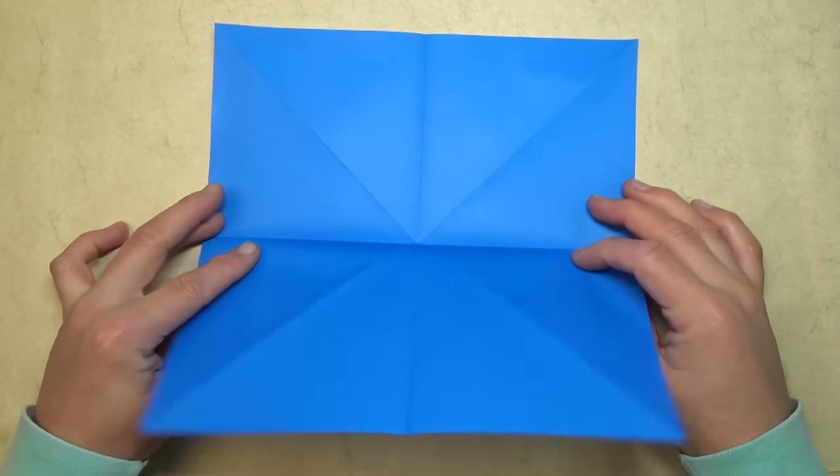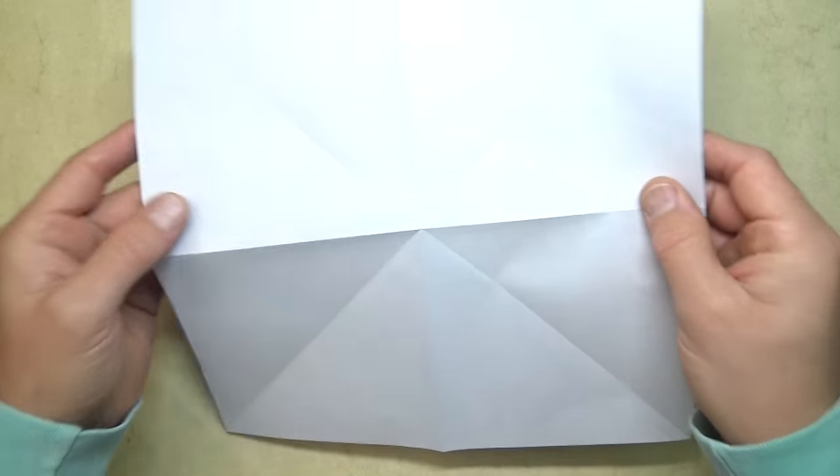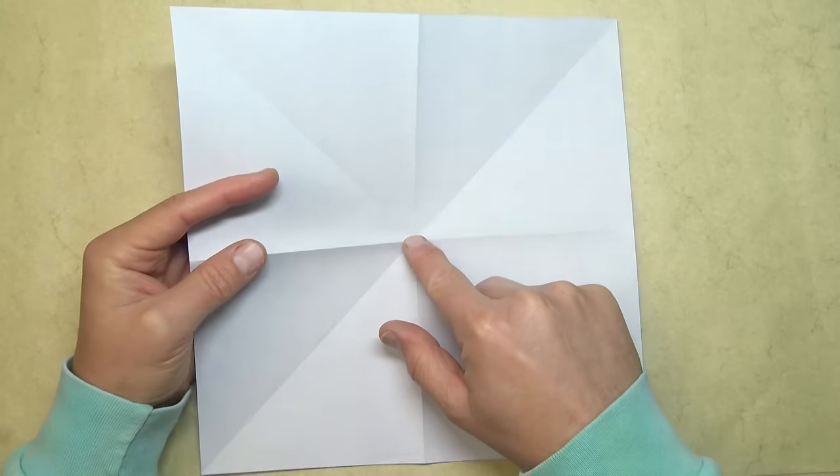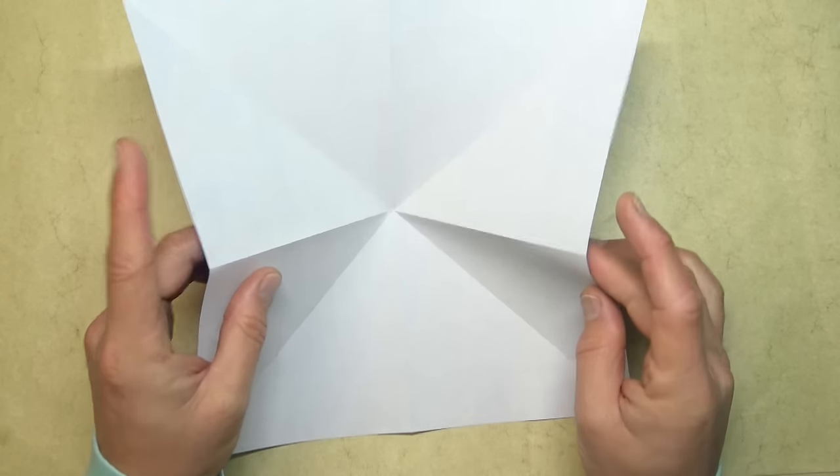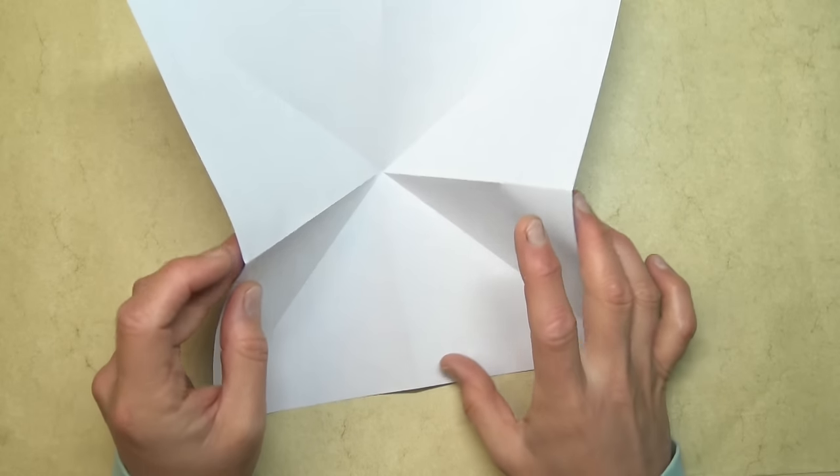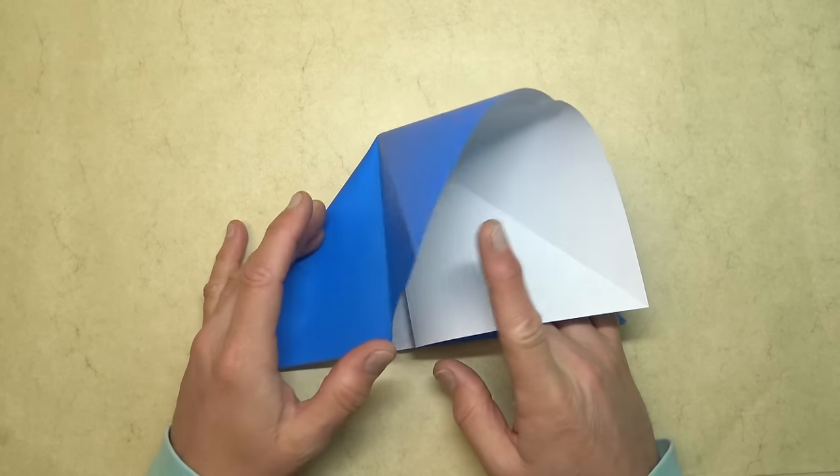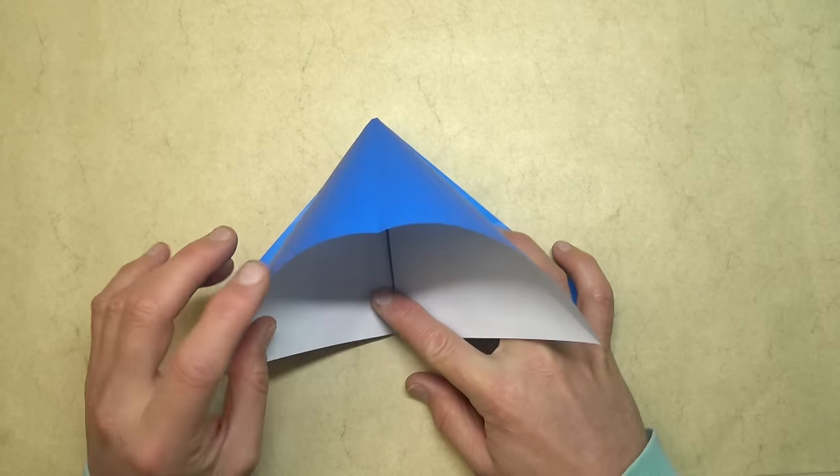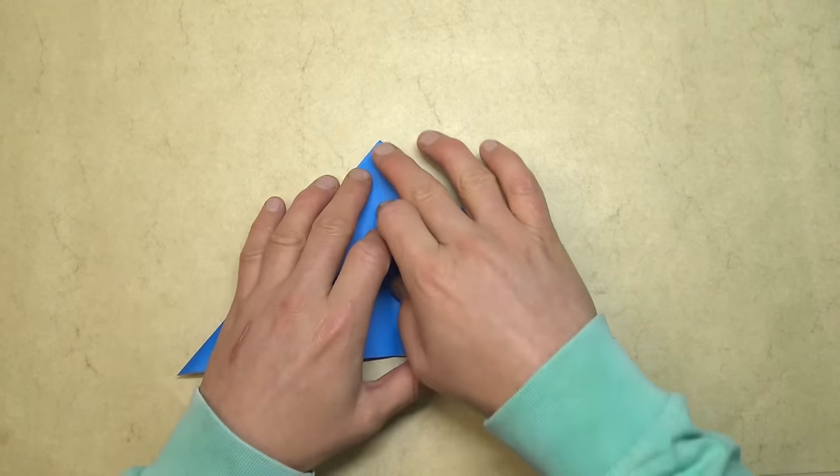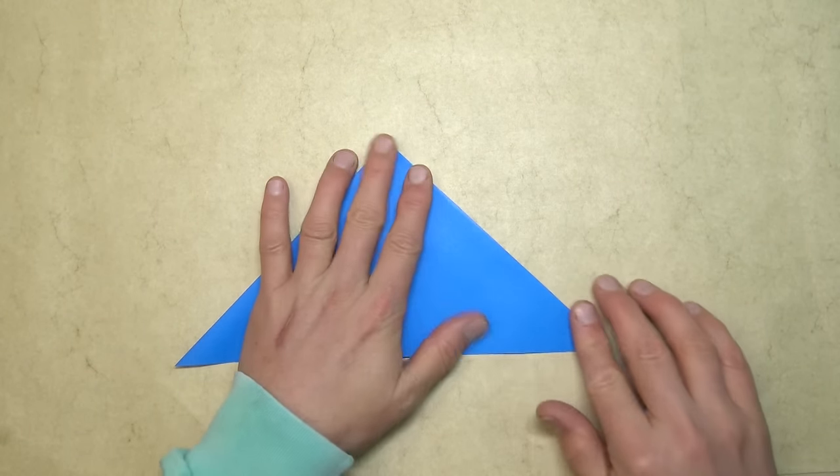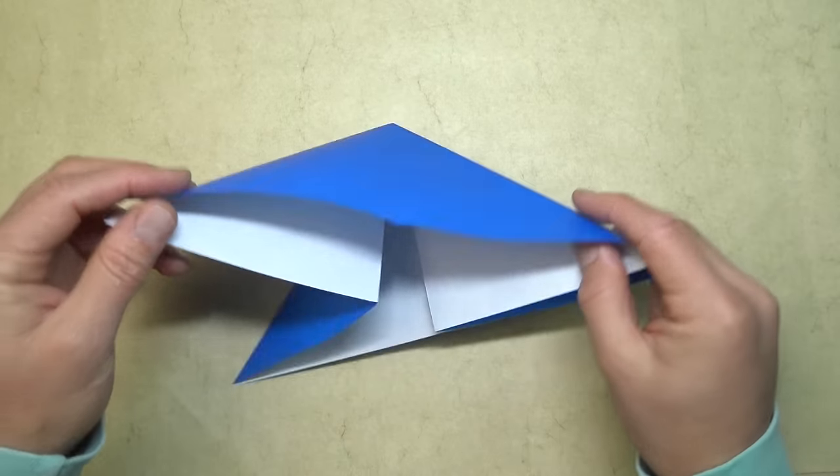And fold in half in this direction. Now, unfold, turn over, and push the middle point in. And bring these two points down to here. And flatten. And waterbomb base complete.